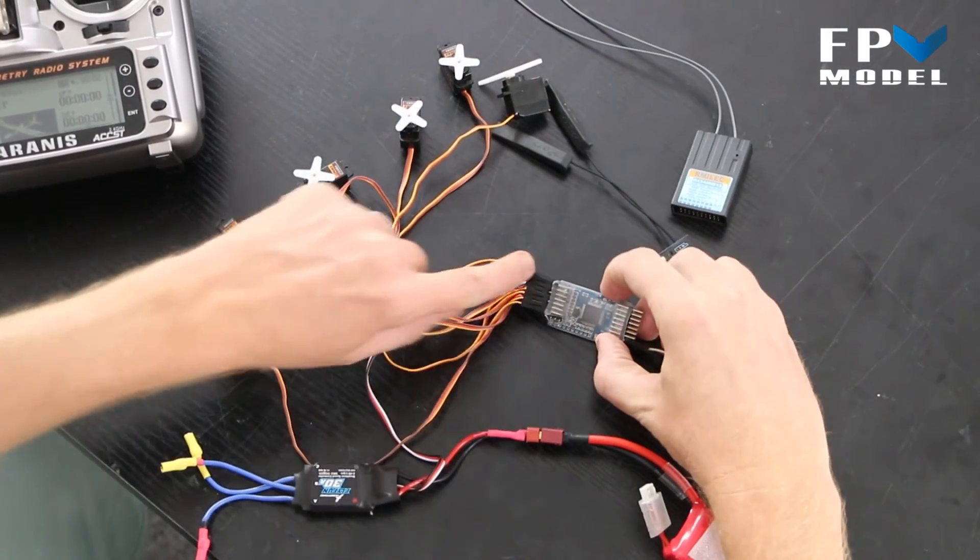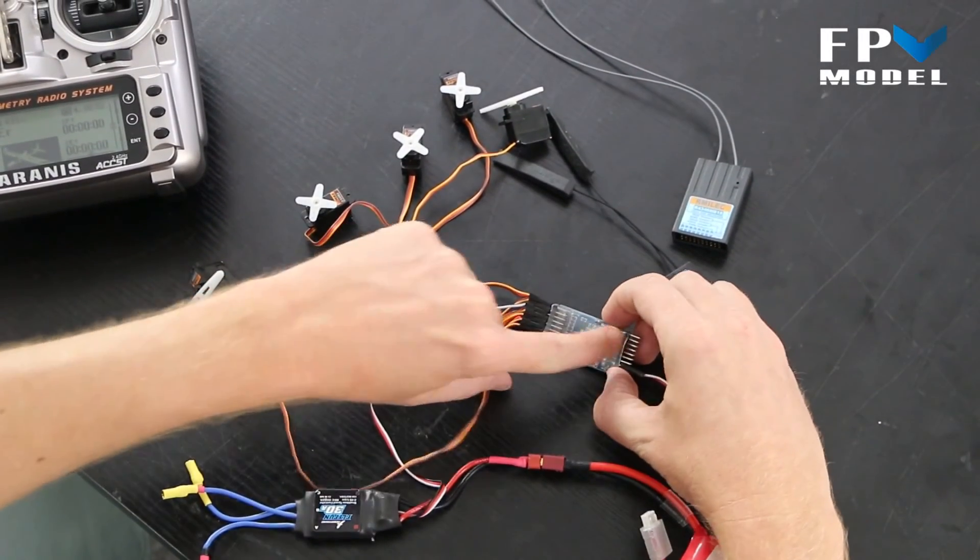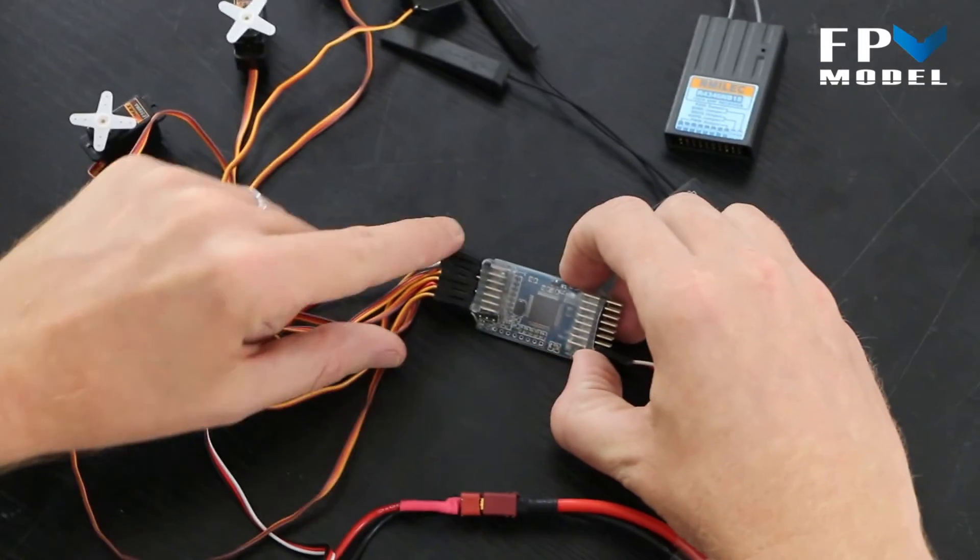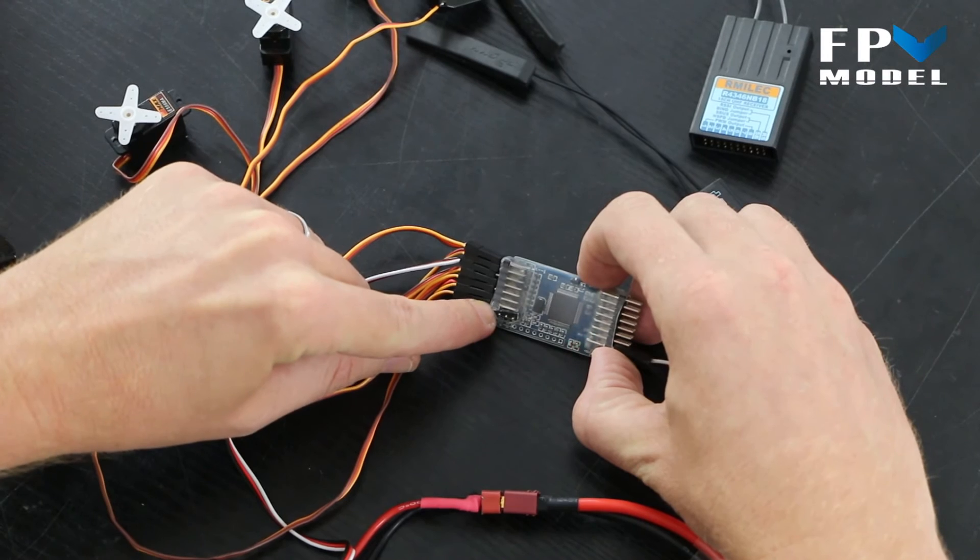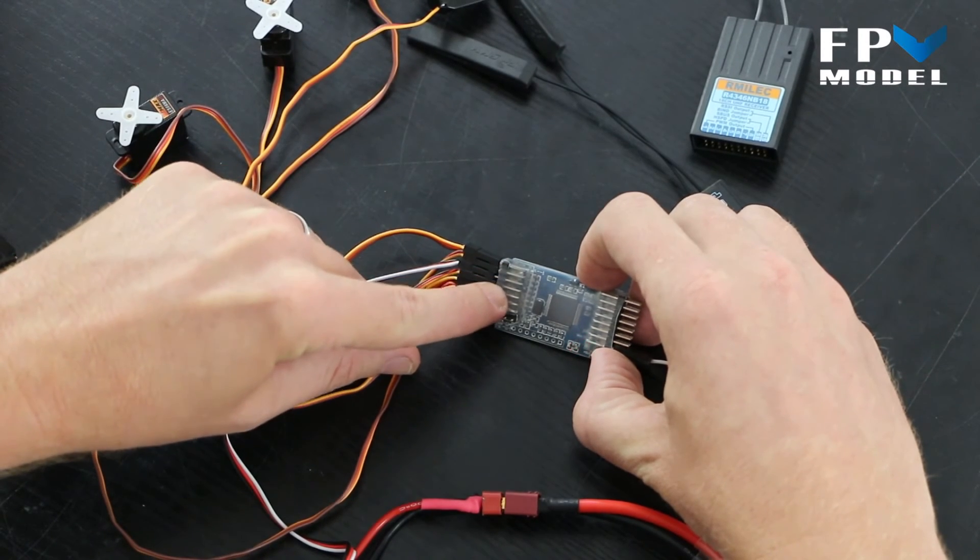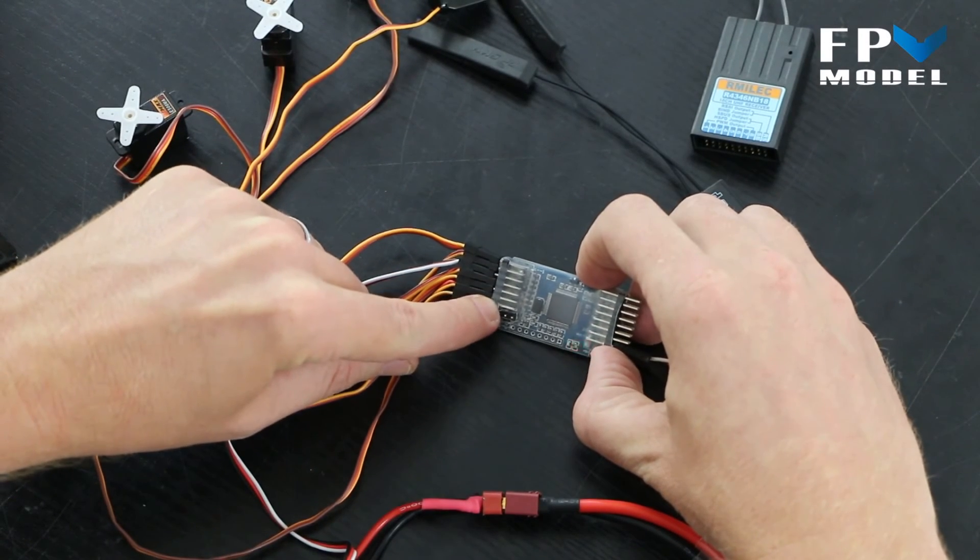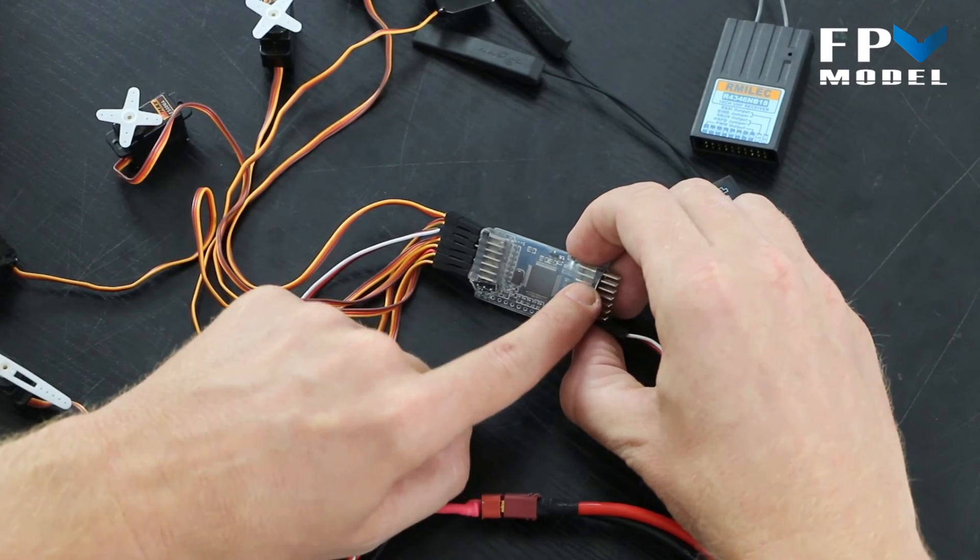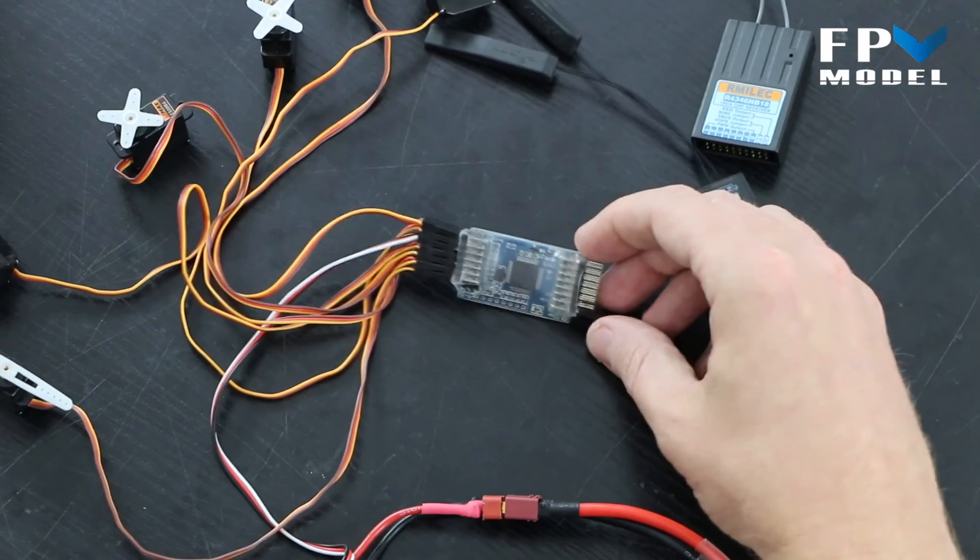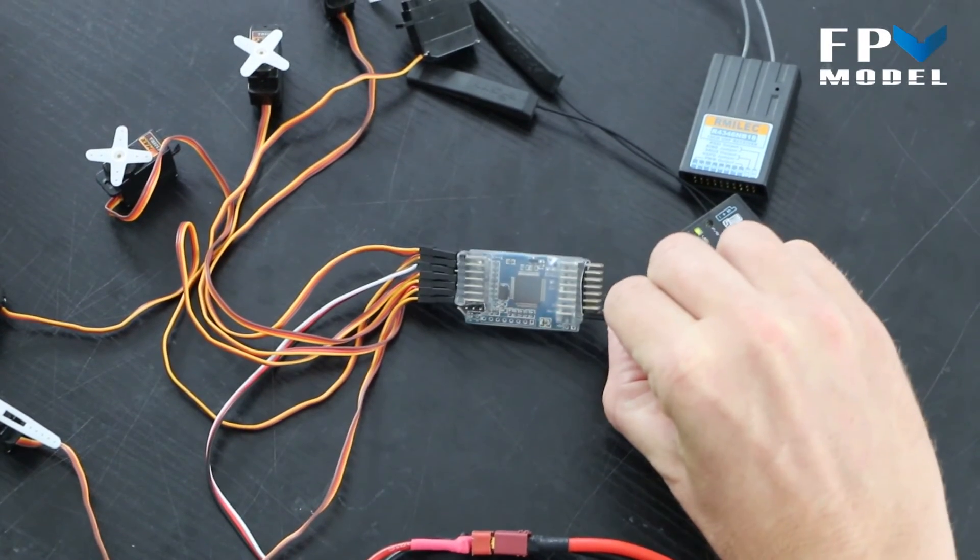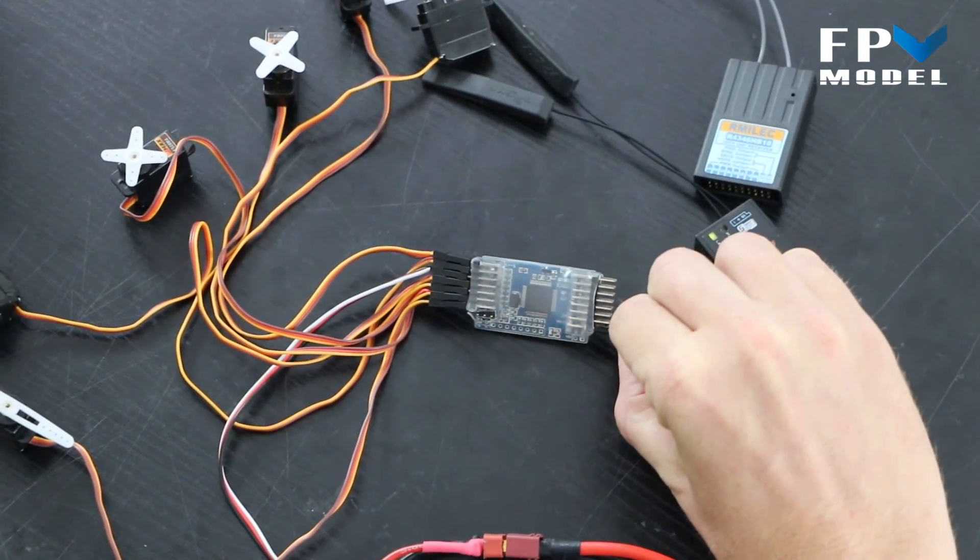You have seven channels on the left, seven channels on the right going from top to bottom. On the left hand side is one, two, three, four, five, six, seven and then you have eight, nine, ten, eleven, twelve, thirteen, fourteen on the right hand side going from the top to bottom with the SBUS cable being plugged into the bottom side on the right.